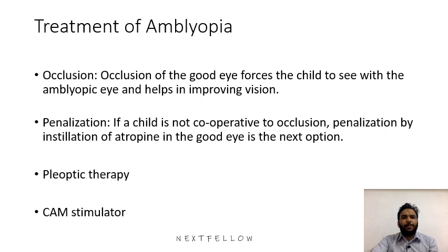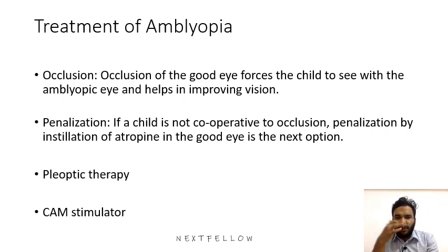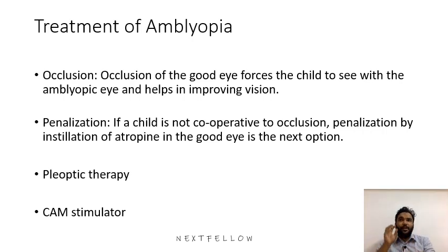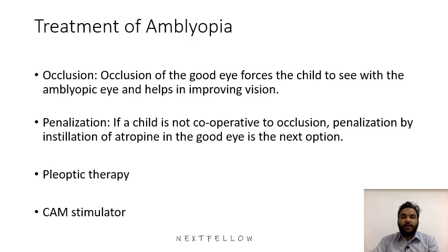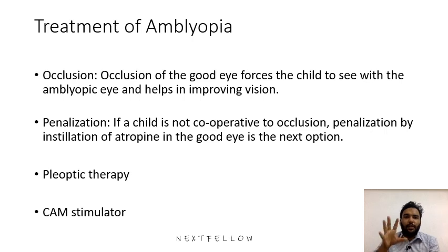There is also pleoptic therapy: if the right eye is amblyopic, all other parts of the retina are bleached using bright light, and only the fovea is stimulated normally. This prevents use of other retinal areas and encourages foveal fixation, working well in cases of abnormal retinal correspondence. Finally, the CAM stimulator provides various types of stimulation to the amblyopic eye — using colored lights or black-and-white striped lights — to stimulate that eye and improve vision.